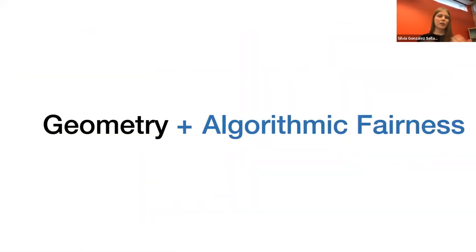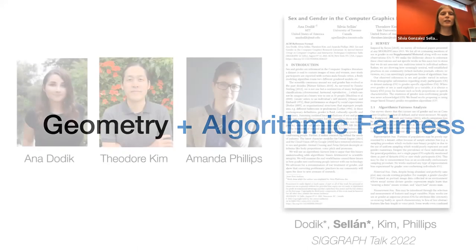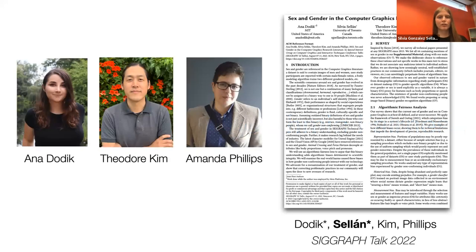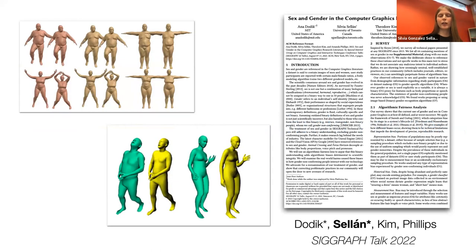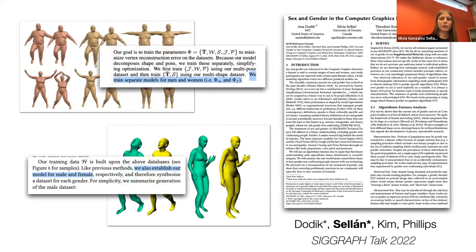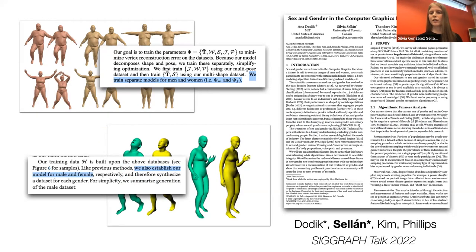Another example I'm particularly proud of: we look at existing algorithms from computer graphics through the lens of algorithmic fairness. Joint work with Anna Dodik from MIT and professors Theodore Kim and Amanda Phillips. We surveyed algorithms that generate geometries of the human body and studied how gender is currently treated as an algorithmic variable, and the harms and biases introduced by doing so. This work needed deep expertise in both geometry and in queer theory, gender studies, and algorithmic fairness.